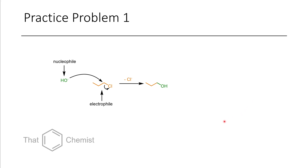So first we started with this propyl chloride, or chloropropane if you prefer. In this case, hydroxide is the nucleophile and it's attacking at the primary position, displacing chloride. The chloropropane is the electrophile. In reality this type of reaction could work to some extent, but there are competing reactions that would occur, so this is just a simplified reaction.